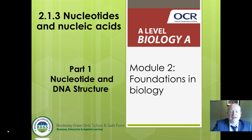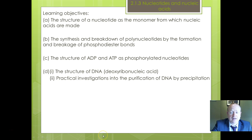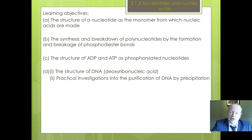Welcome to OCR Biology Part 1 for DNA. We're focusing on nucleotides and nucleic acids. Let's look at the particular learning objectives we're considering today: the structure of nucleotides, which we call monomers; the synthesis and breakdown of polynucleotides forming phosphodiester bonds; ADP and ATP; and a couple of other examples of nucleotides. We'll also cover the structure of DNA and briefly mention some practical investigations coming up in the next couple of weeks.